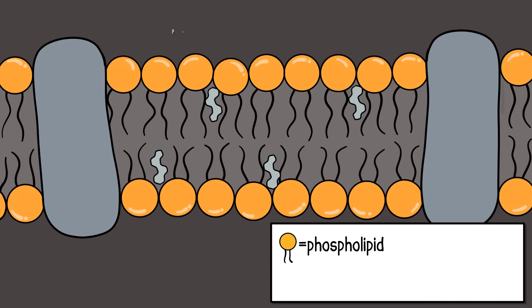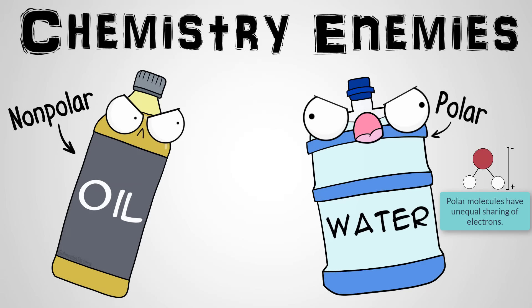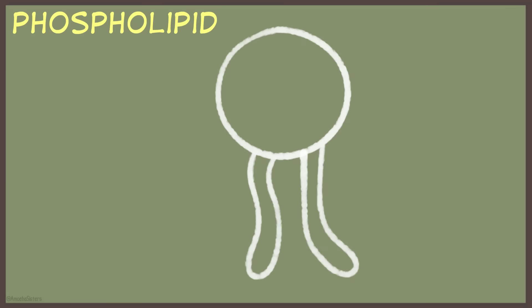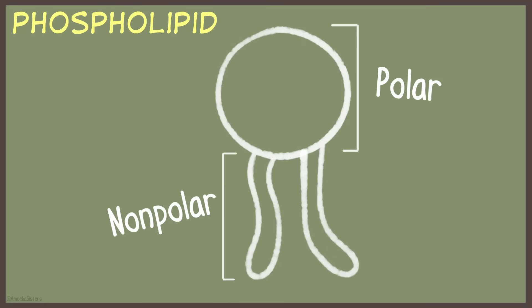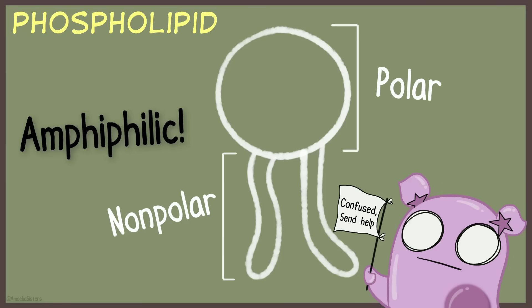We're looking first at the phospholipid bilayer. A phospholipid is a lipid, but an interesting one. Many lipids are nonpolar — think of oil, for example; it won't dissolve in water. But a phospholipid is interesting because one part of it is polar, the head, and the other part is nonpolar, the tail. It's amphiphilic. The polar head of the phospholipid is hydrophilic — that part loves water — while the nonpolar tails are hydrophobic; they do not like water.